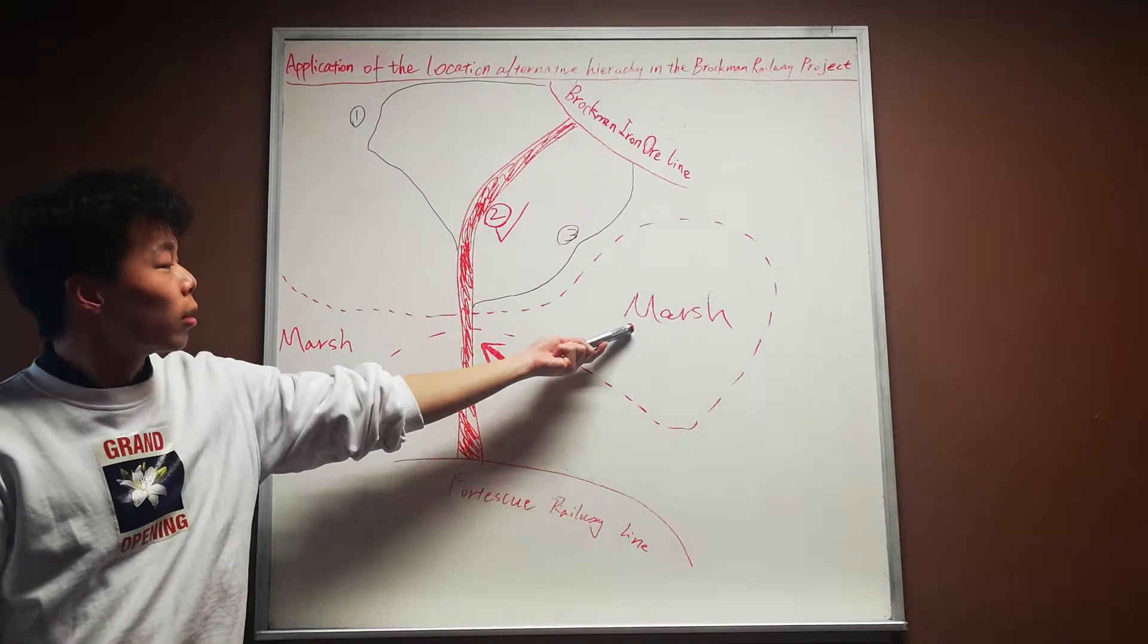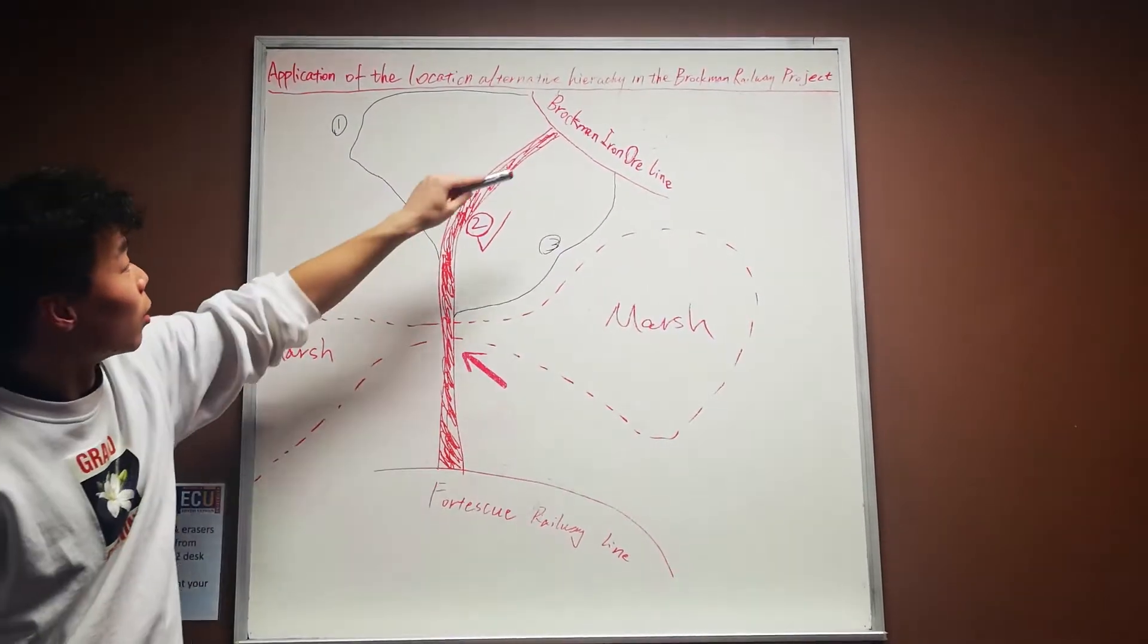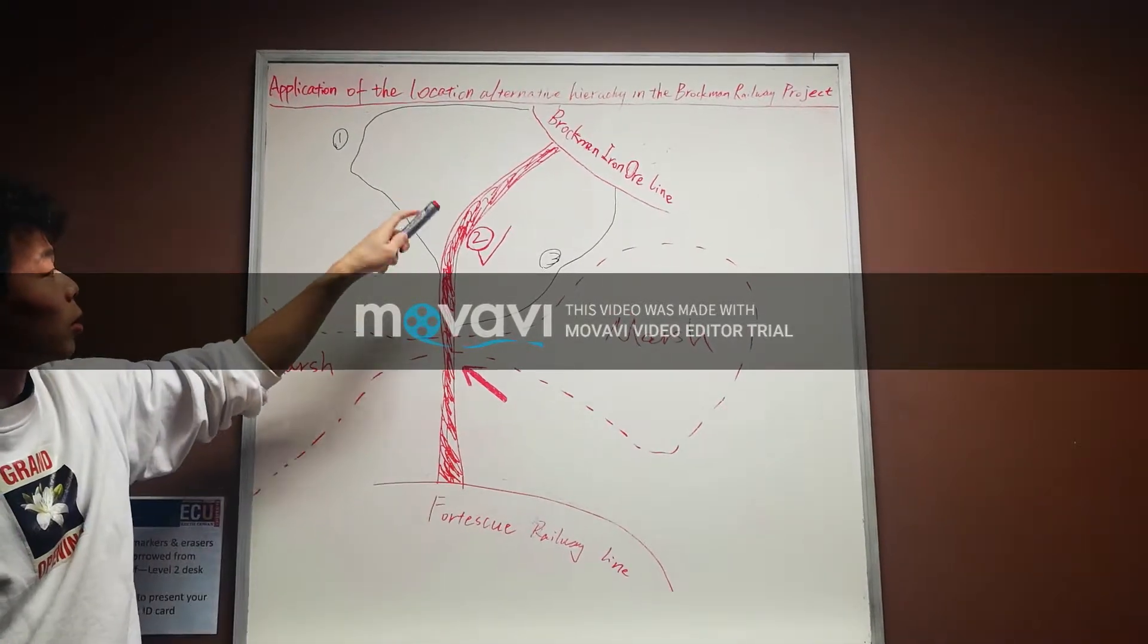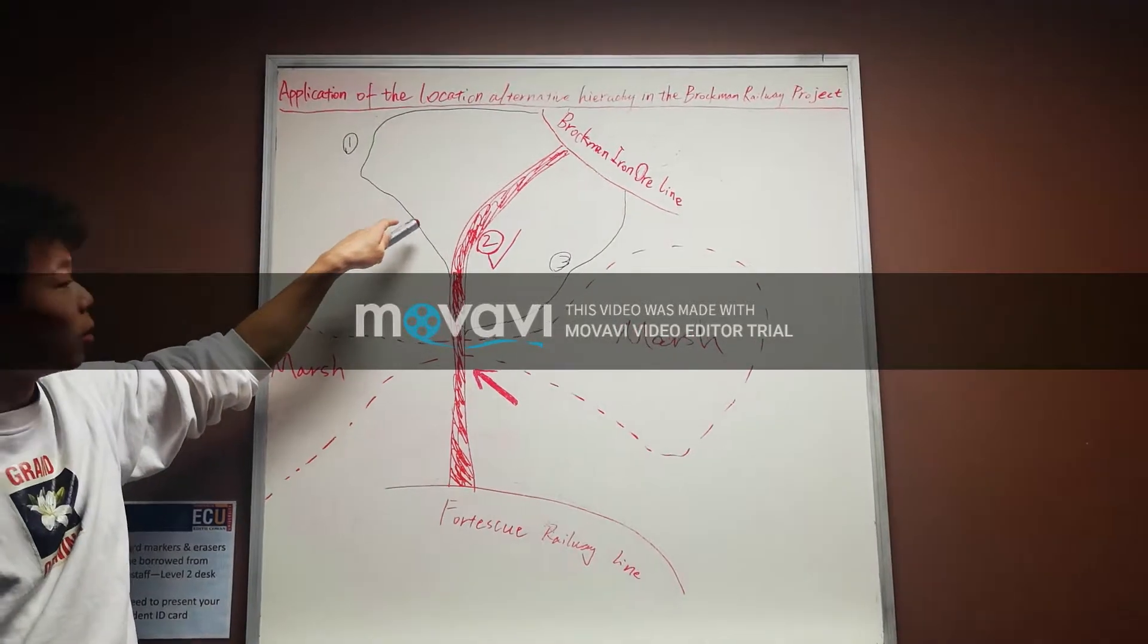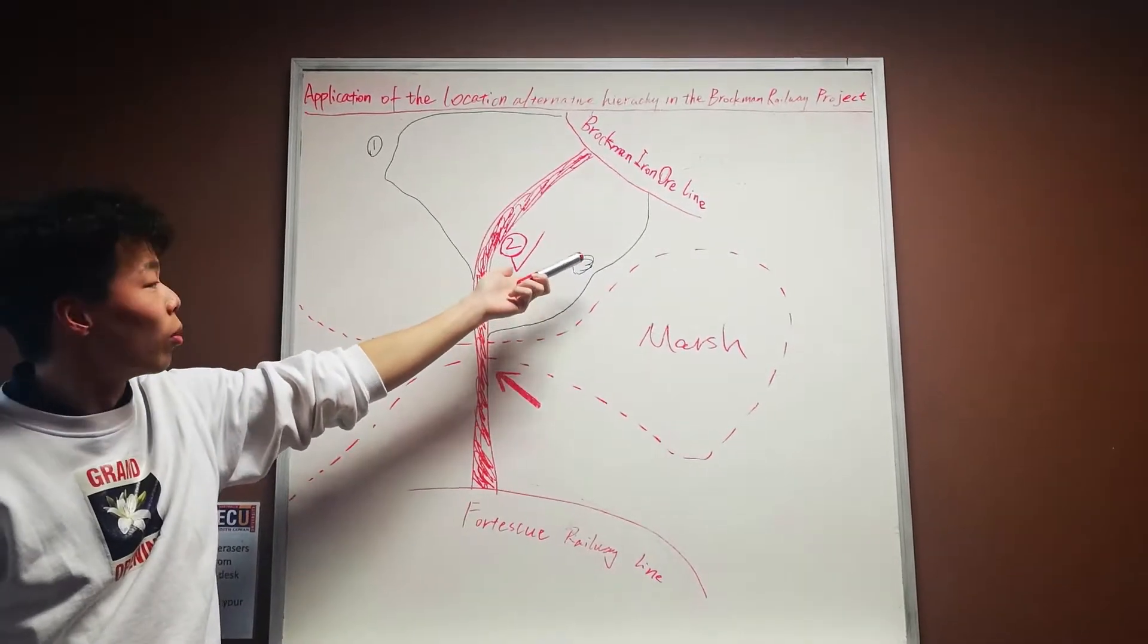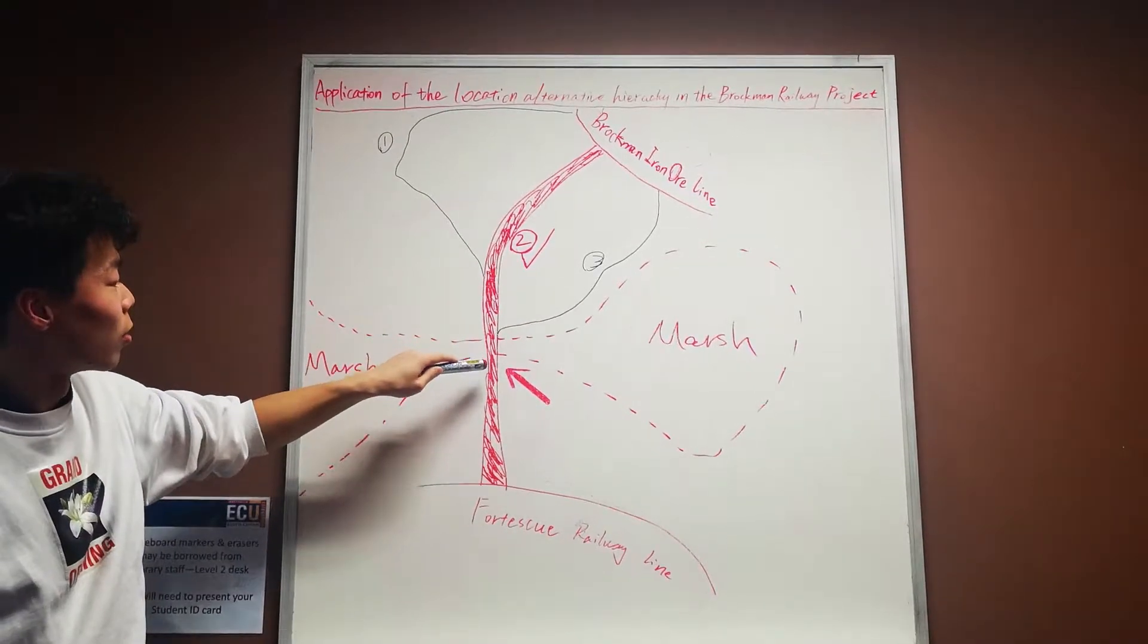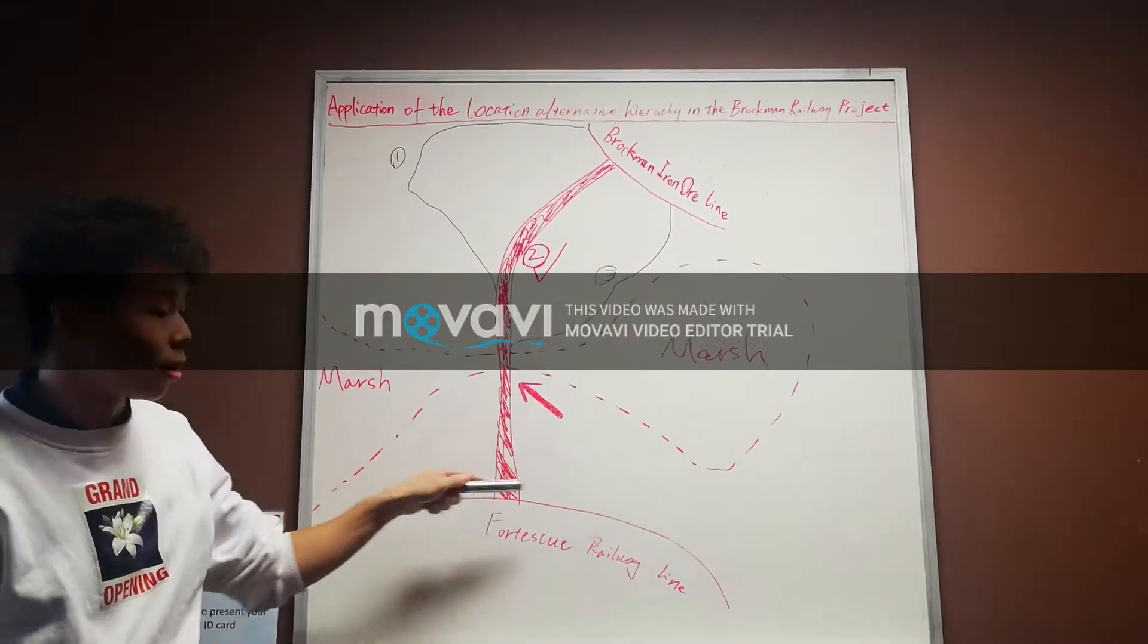This one is the marsh and these two are the existing railway lines and these are the three alternative routes they have considered to build. The first one is crossing too much area of vegetation than the second one and the third one is too close to the marsh and so that it creates more pollution. So finally they choose the second route and cross it from the narrowest point here and achieve the connection between the two lines.